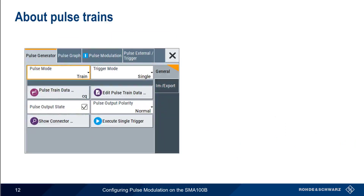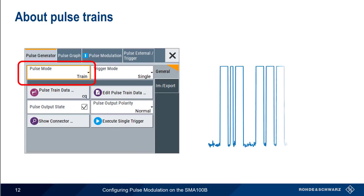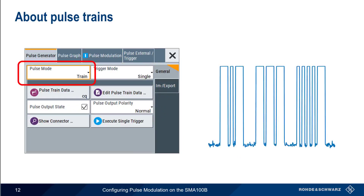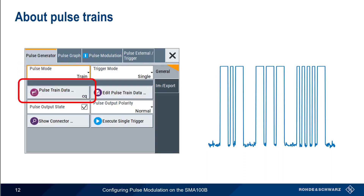The third Pulse Mode on the SMA-100B is called a Pulse Train. A Pulse Train is a sequence of pulses, each with its own user-definable on and off times. We specify these parameters using something called a Pulse Train data file. Let's take a look at how these files are created and edited.